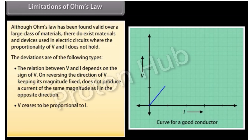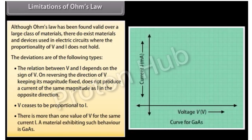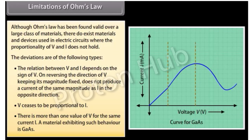V ceases to be proportional to I. There is more than one value of V for the same current I. A material exhibiting such behaviour is gallium arsenide.